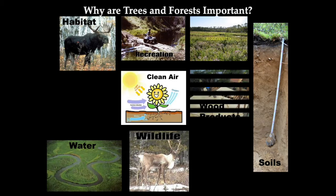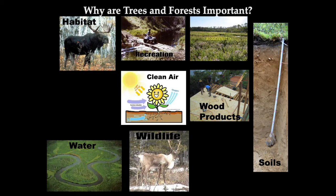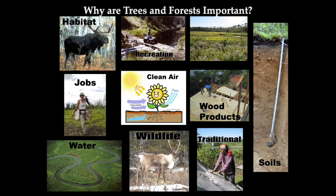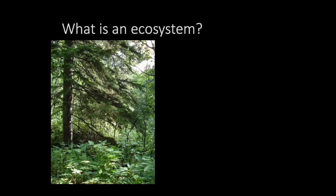Humans also get some of their food from the forest. There are wood products that come from the forest — we have lumber, oriented strand board, veneer, pulp, and so on. Many people have jobs in the forest, and the forest supports many families and communities throughout Alberta. Indigenous people rely on the forest for traditional uses such as hunting, trapping, and gathering food.